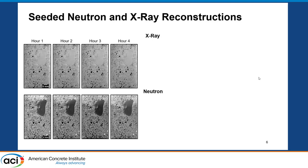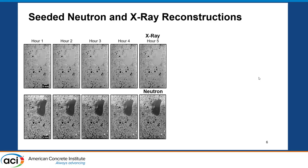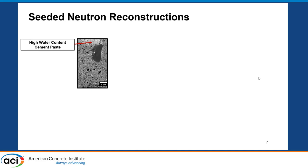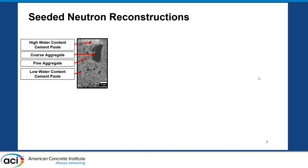We observed the sample for nine hours with a temporal resolution of one hour. In the X-ray, we don't see much change, but in the neutron images we can see change, which is what we expect — we use X-ray to look at changes in density and capture structural detail, whereas neutron is very good at capturing moisture. The high water content cement paste appears as the bright, higher-attenuating region, and low water content cement paste is the darker gray. We also see coarse aggregate, fine aggregate, and pores.